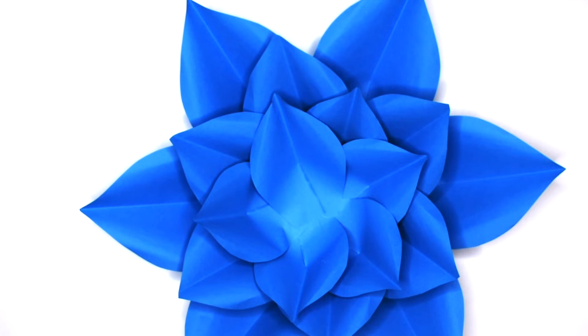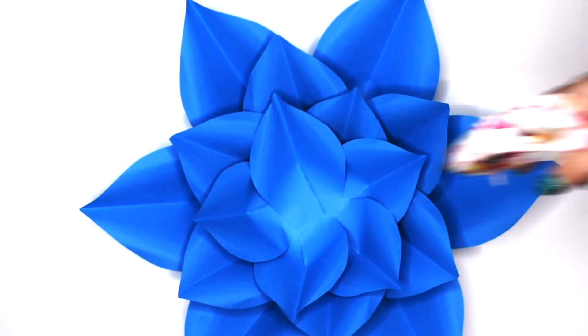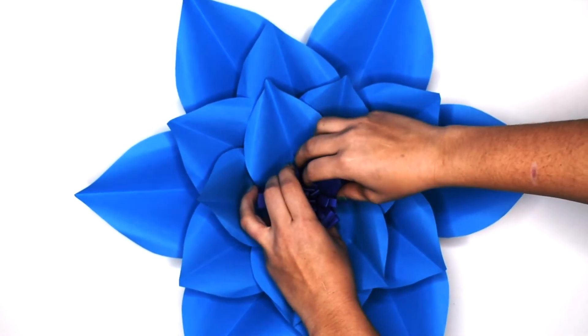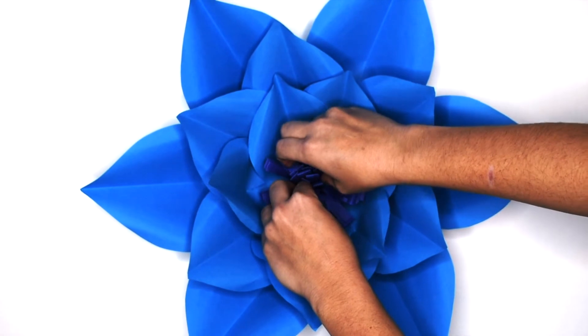Now that the center is complete it is time to glue it into the middle of our flower. Go ahead and just add a generous amount of hot glue and sit your flower center right on top of that and stick it down.